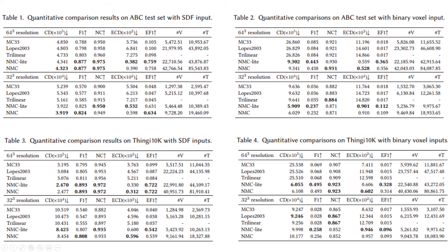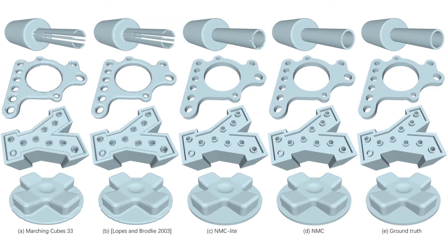Here are the results. Our model outperforms others. Feel free to pause and look at the numbers. Here are the results when the inputs are SDF-grids. The first two columns show the results of Marching Cubes 33, and method by Lopes and Brodlie. The next two columns show our results, NMC and NMC-lite. Our model can predict the right topology, preserve sharp features, and even perform better on smooth features.